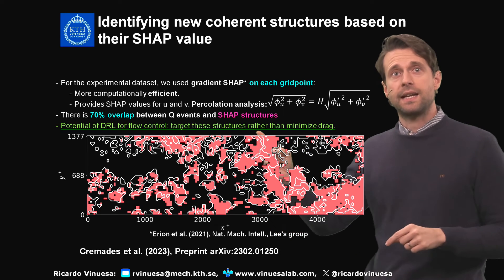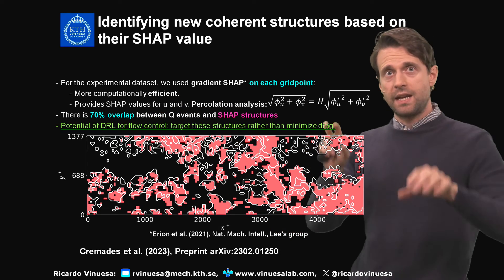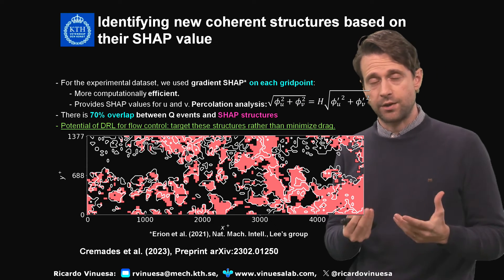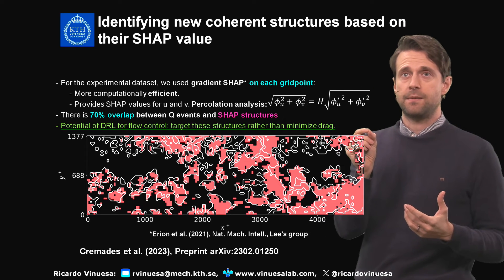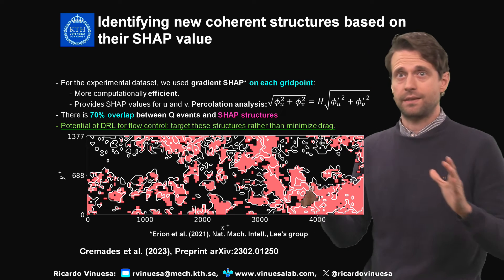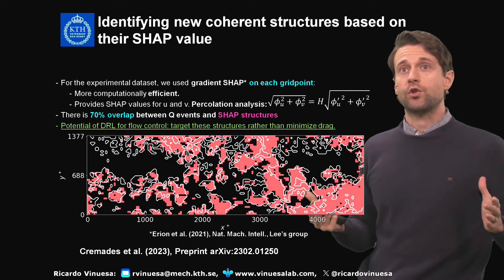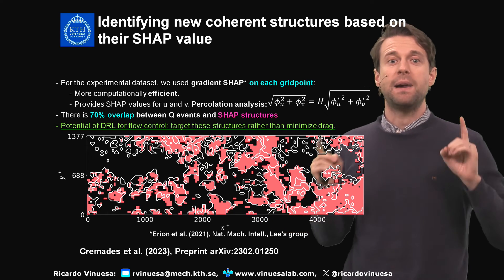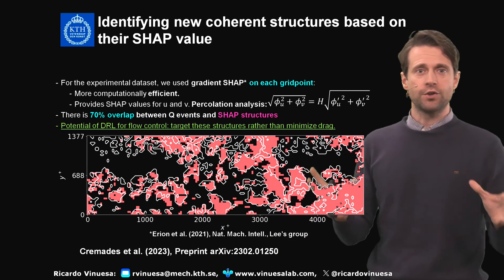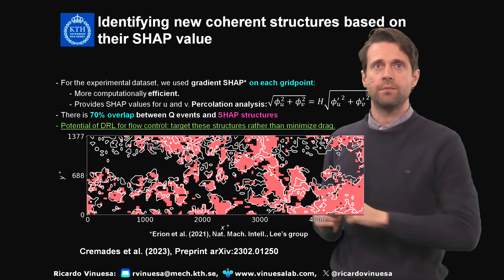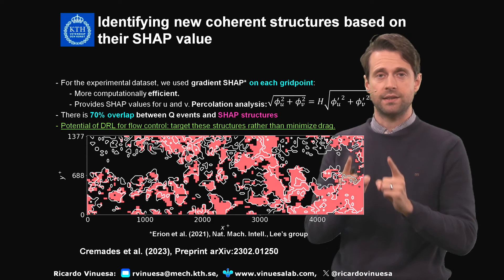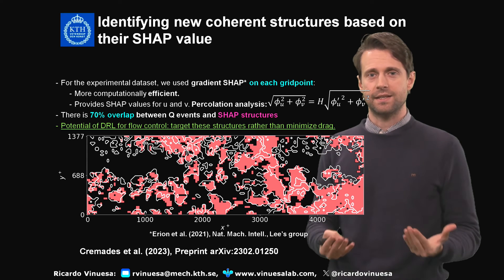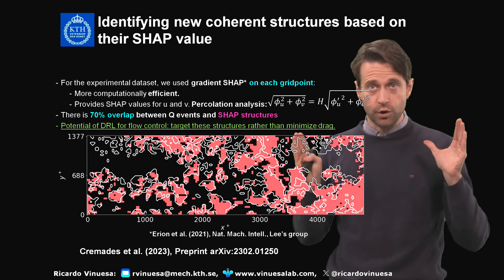There is a 70% overlap between the Q events and the SHAP extractors. This is a satisfying result — the fact that Q events are quite important is reassuring, since regions of strong Reynolds shear stress obviously need to be important for predictions. But they do not tell the whole story. The remaining 30% discrepancy is precisely what requires more in-depth physical analysis to completely understand the role of these more important extractors.